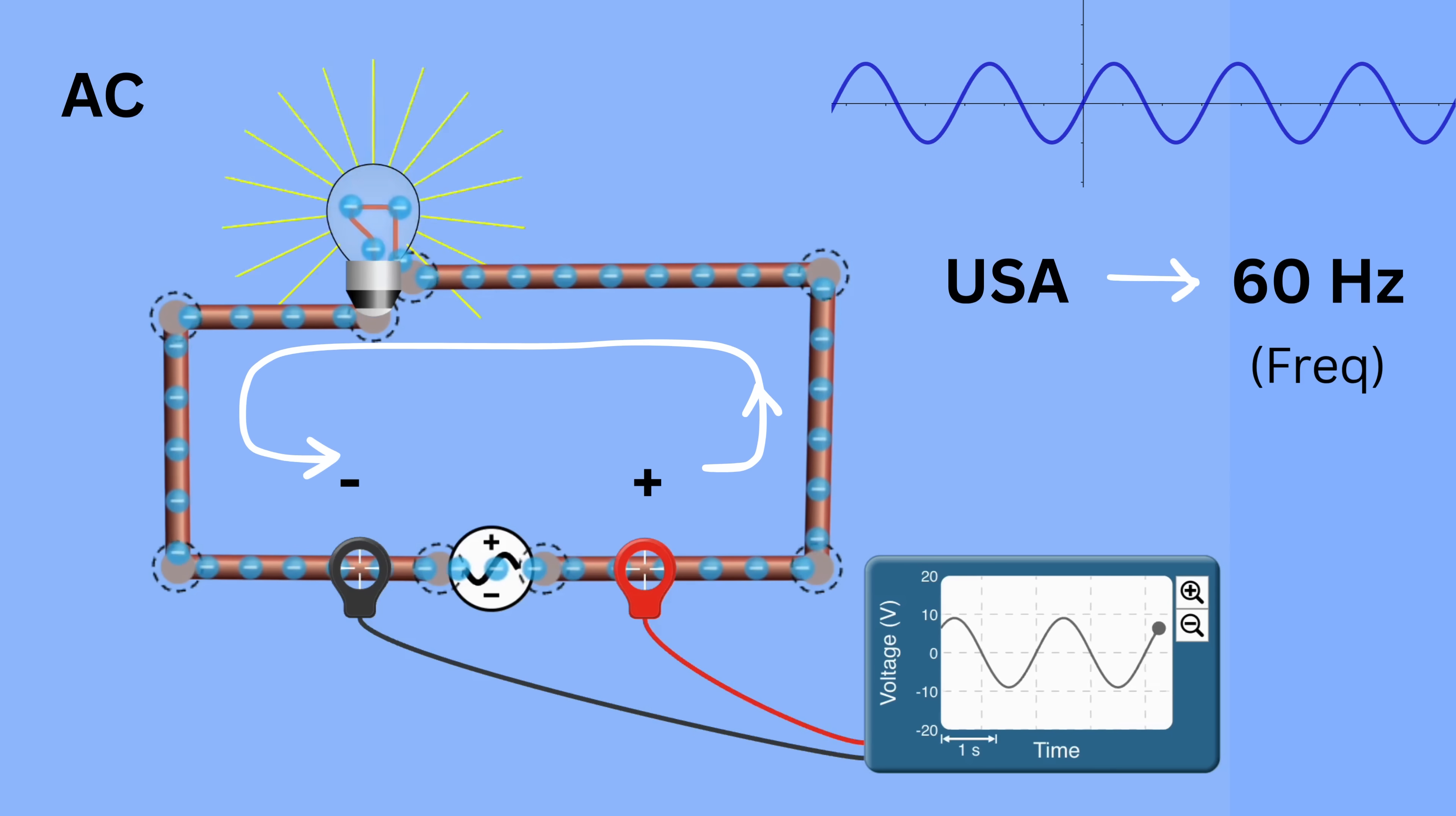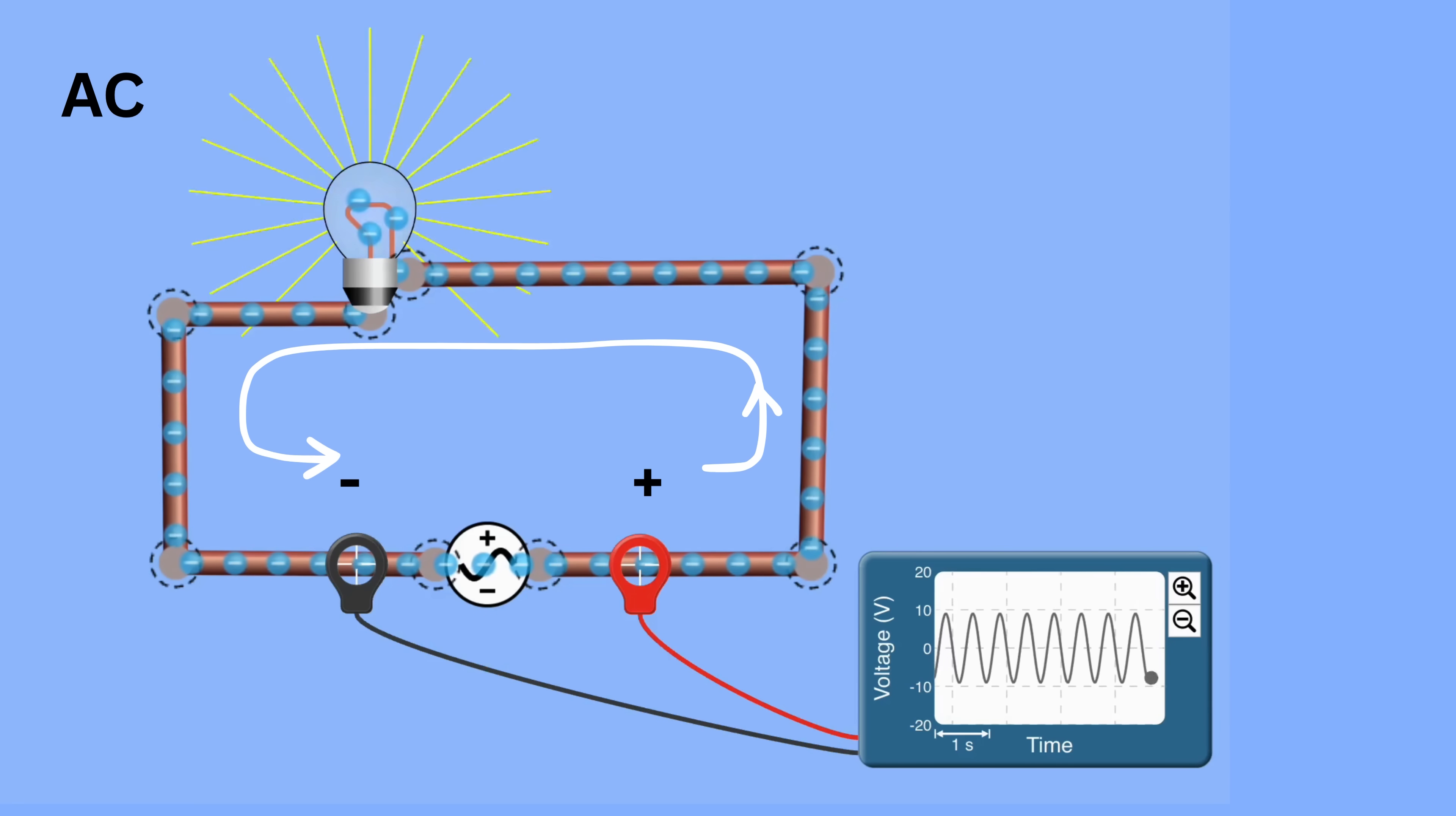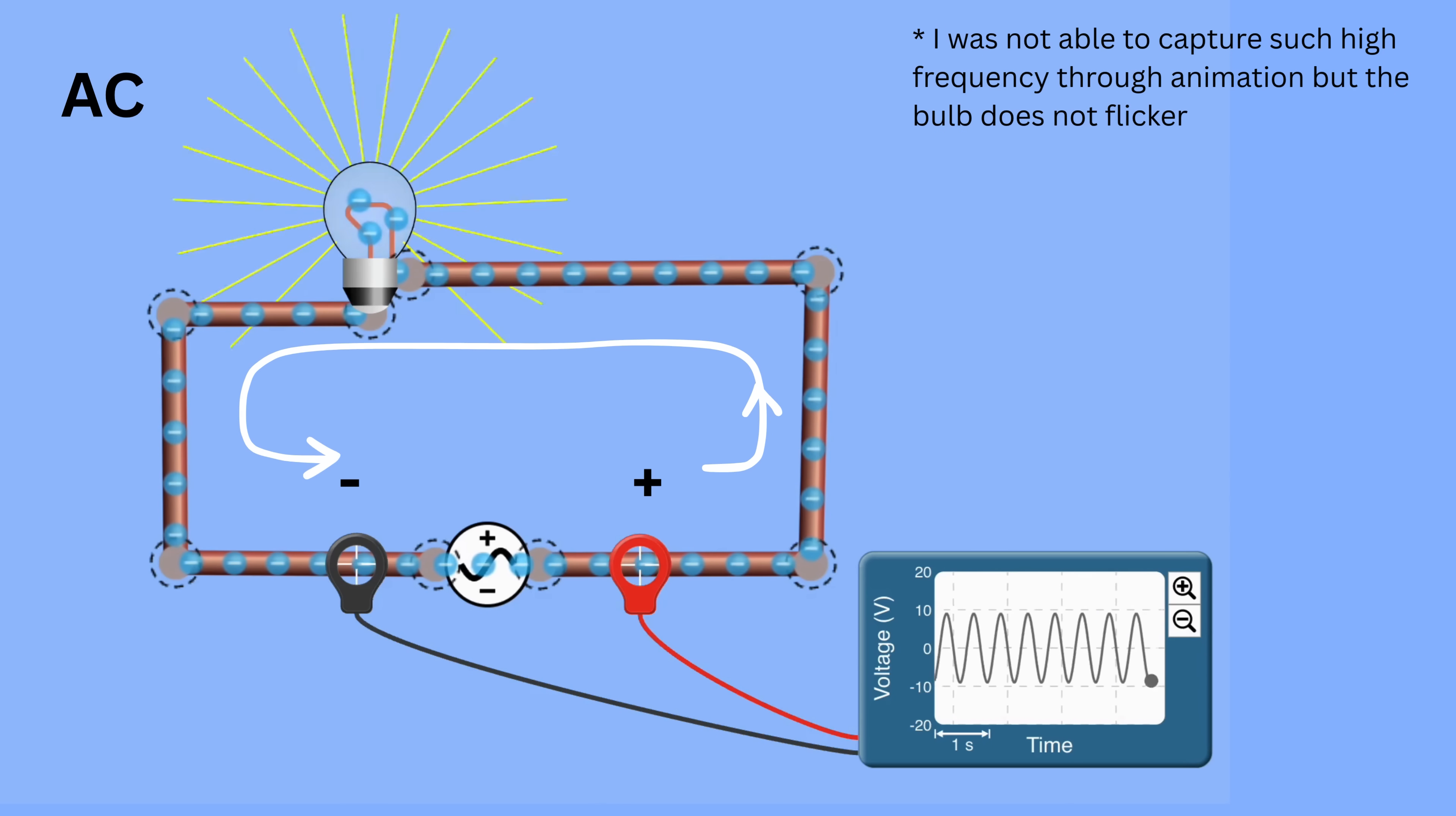That's why if you connect an AC supply to a lamp, the electrons in the wire move back and forth rapidly instead of flowing steadily in one direction. However, because this happens extremely fast, the bulb glows continuously, and our eyes cannot notice the flickering.